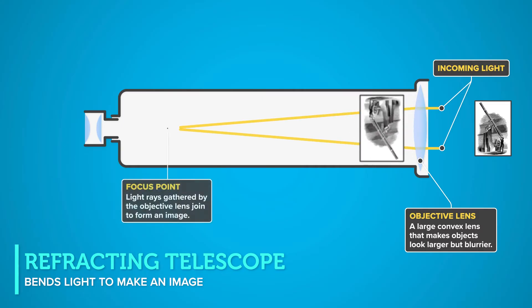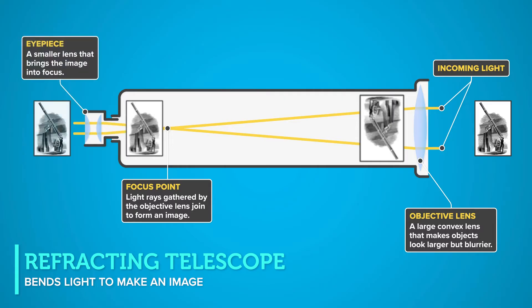At the focus point, light rays gathered by the objective lens join to form an image. A smaller lens, called the eyepiece, brings the image into focus.